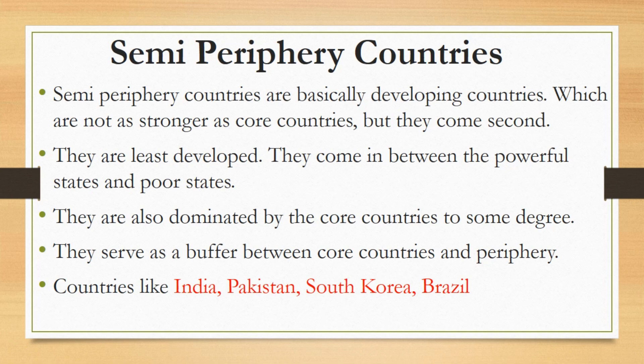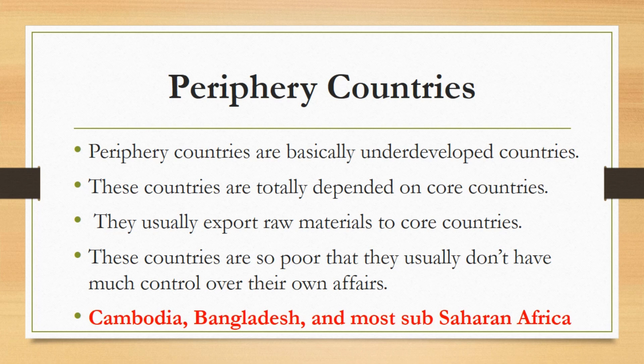Periphery countries are basically underdeveloped countries. All the poor regions of the world come under this category. These countries are totally dependent on core countries and usually export raw materials to them. These countries have low-skilled, cheap labor. However, these countries are so poor that they usually don't have much control over their own affairs — their policies are usually decided by the core countries. Countries like Cambodia, Bangladesh, and most of sub-Saharan Africa come under this category.